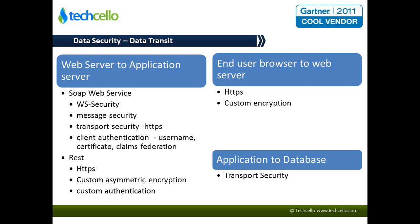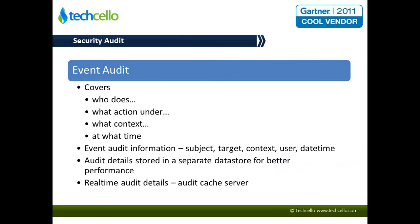If it is a REST-based service, you could use HTTPS-based communication, or you could also deploy custom asymmetric encryption. For transit, the best form of encryption is asymmetric — compared to storage where symmetric is best, for transit asymmetric is preferred. You could go for a private-public key kind of custom encryption with REST as well. You can also introduce custom authentication headers in your HTTP requests. That covers data security, especially when data is in transit.